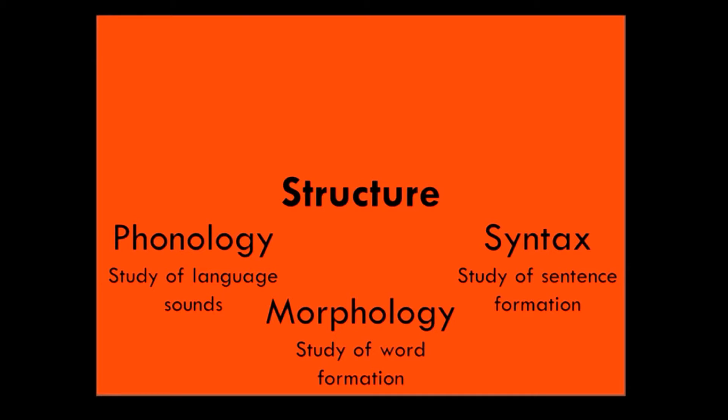Phonology, morphology, and syntax are at the core of every language. These three elements make up the rules by which every language operates — for example, which sounds are allowed to come next to each other, or whether the adjective comes before the noun or after. Collectively, these three areas comprise the grammar of the language.